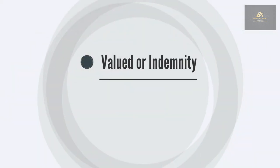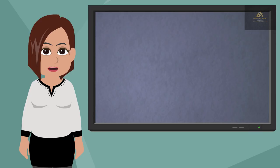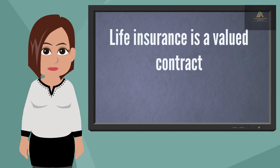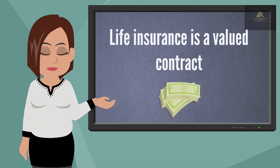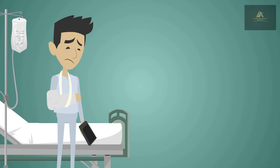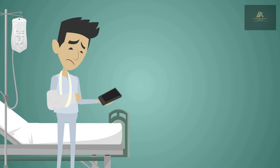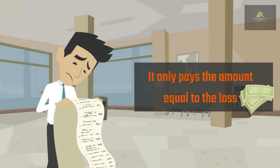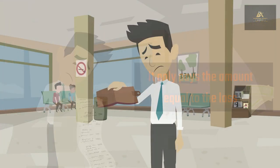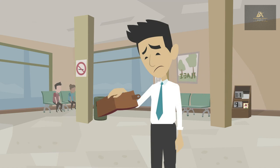Valued or indemnity: life insurance is a valued contract, which pays a stated amount regardless of the actual loss incurred. Health insurance is an indemnity contract — it only pays the amount equal to the loss. With health insurance, you are not allowed to make a profit.